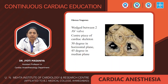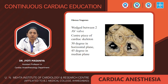Coming to the fibrous trigone: the aortic valve is wedged between the two atrioventricular valves — the mitral valve and the tricuspid valve. In relation to the aortic valve, the mitral valve is located posteriorly and to the left, and the tricuspid valve is located inferiorly and to the right. These two atrioventricular valves abut on the posterior inferior margin of the aortic root. The aortic valve is the centerpiece of the cardiac skeleton, positioned 30 degrees in the horizontal plane and 45 degrees in the medial plane.